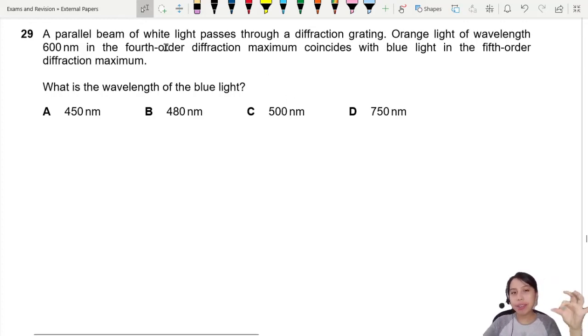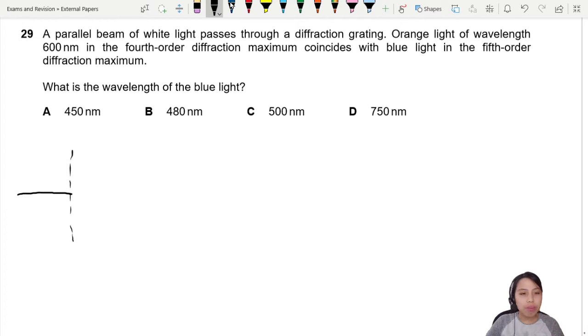Here we have a parallel beam of white light passes through a diffraction grating. Orange light of wavelength... it's time to draw. Picture time, let's go. So here's a diffraction grating, I'll use a dotted line. White light generally just like coming in. White light, by the way, has all wavelengths.